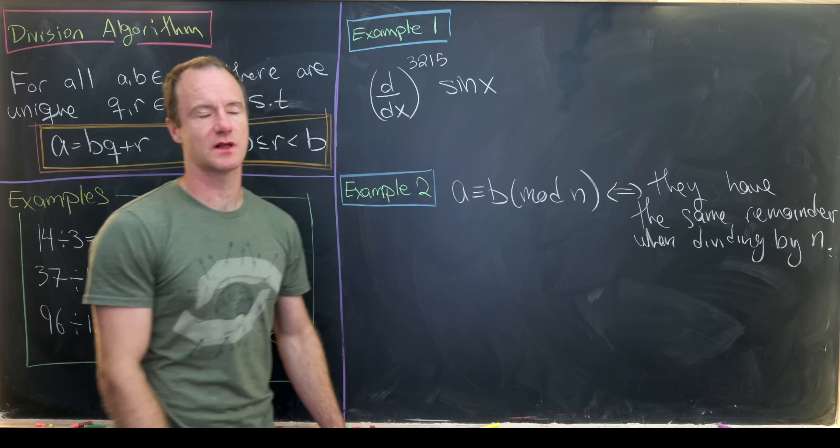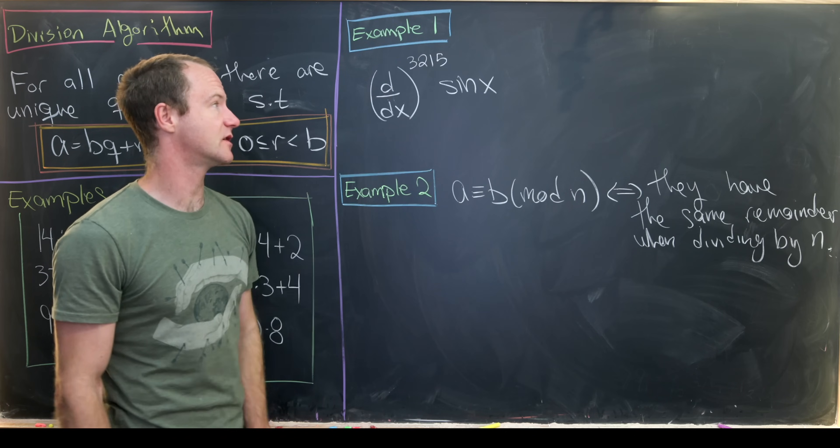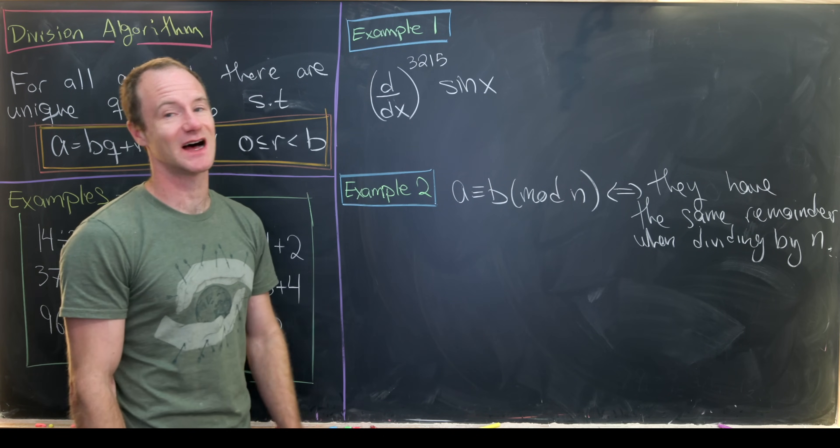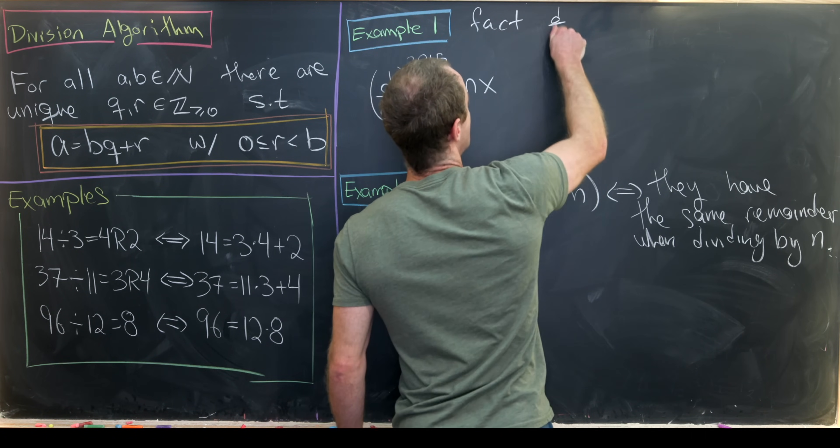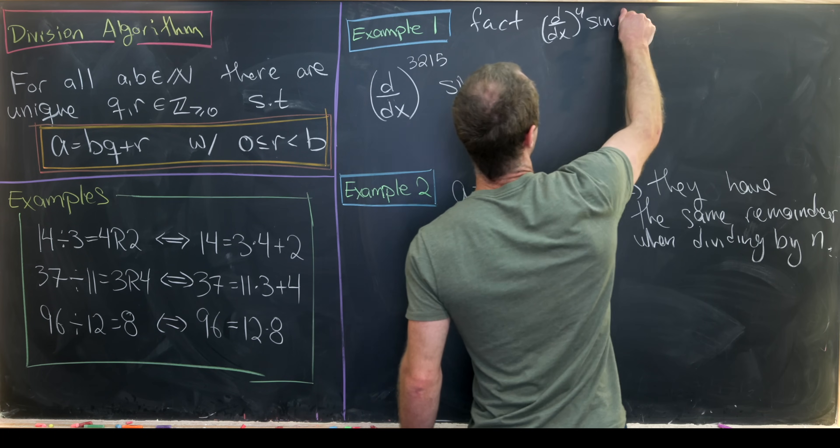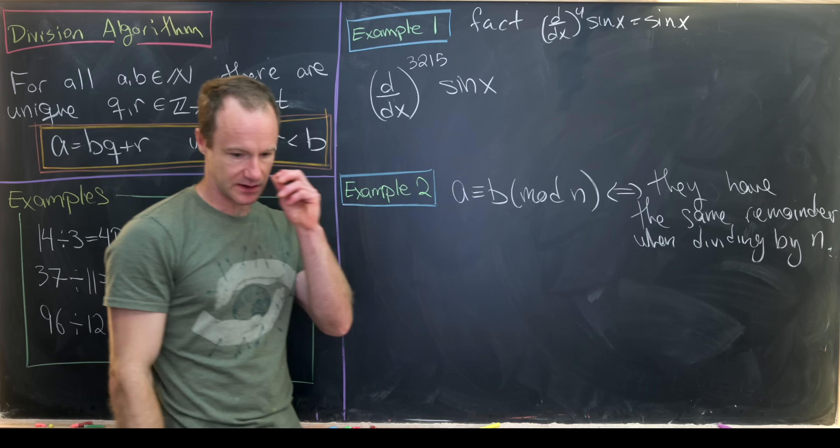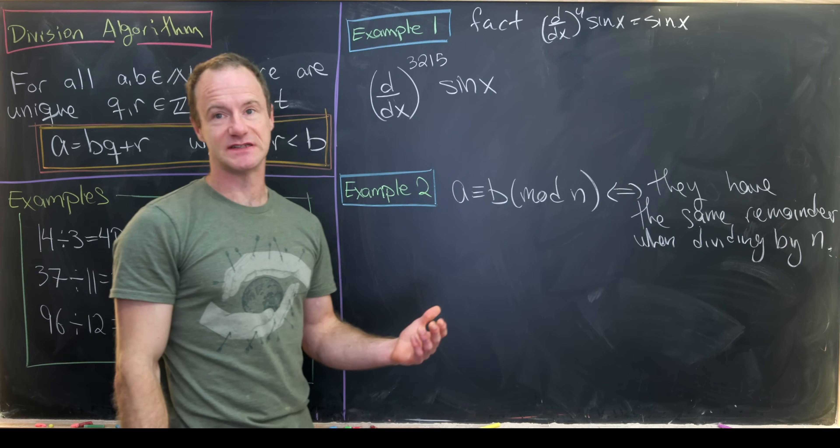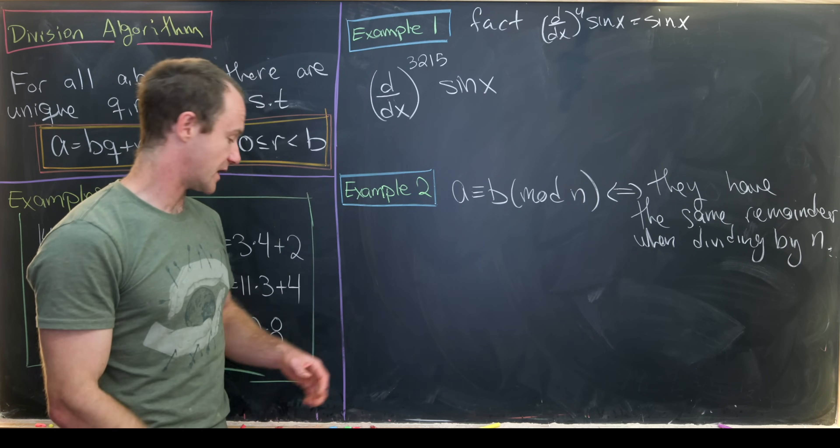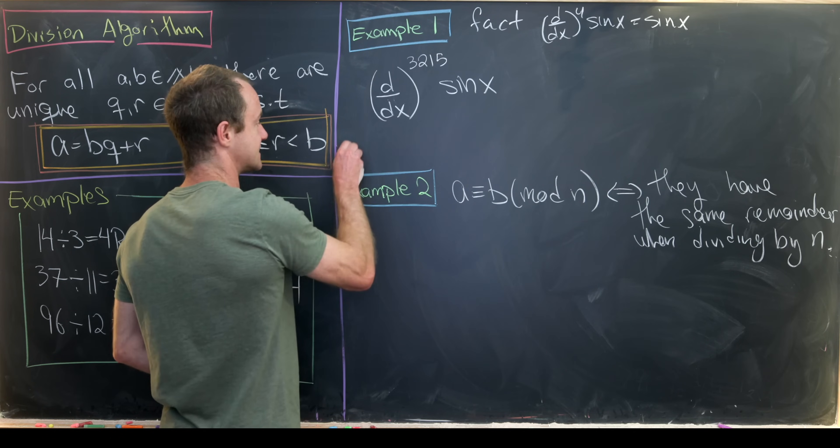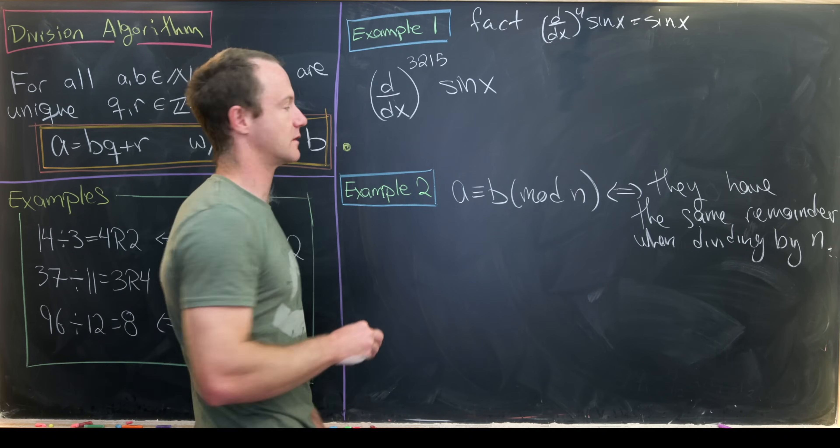Okay, so our first example is a little bit of a calculus example and this is generally given as an exercise in a lot of calculus 1 classes or differential calculus classes. And here we're going to find the 3,215th derivative of the sine function. And we're going to use the following fact, which is pretty easy to check, and that is that the fourth derivative of the sine function is just the sine function. That's because the first derivative is cosine, the second derivative is negative sine, the third derivative is negative cosine, and then it loops back to being sine. Okay, great.